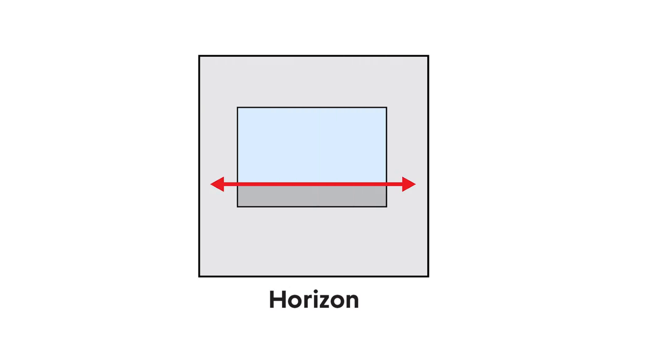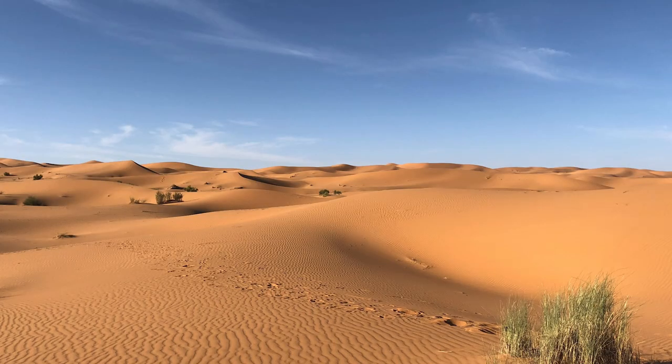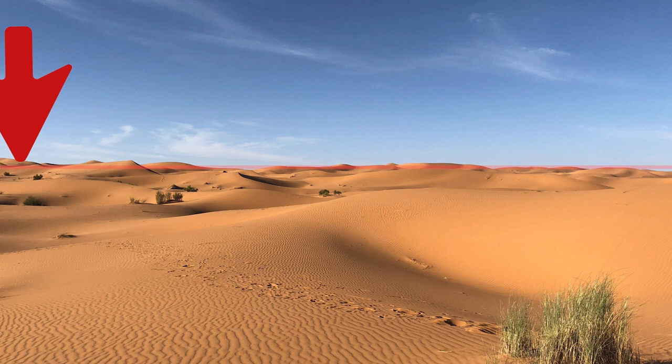Next is the horizon. This is the furthest point from the viewer. If you have an image like a desert where the ground is flat, the horizon line is really easy to spot. It's this area here in the distance where the ground seems to come to an end.